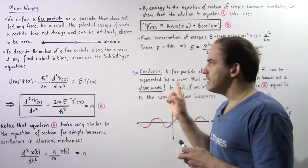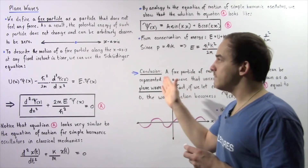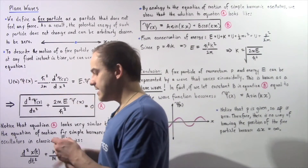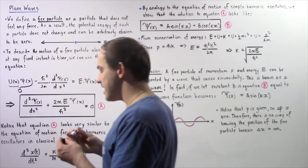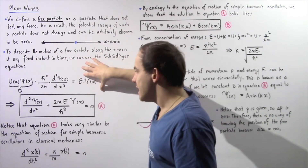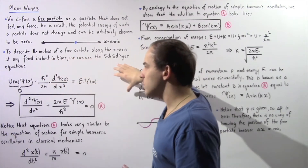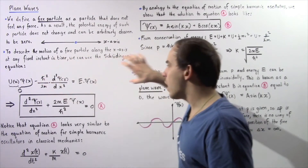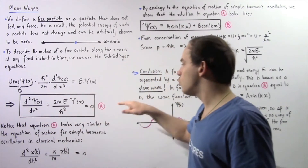Because we're dealing with a free particle and we arbitrarily chose the potential energy of the electron to be zero, this quantity is zero, and therefore this entire quantity is also zero. So we have the negative term equal to the energy term. If we multiply both sides by 2m, divide both sides by h-bar squared, and bring the term to the right side and set it equal to zero, we get equation A.